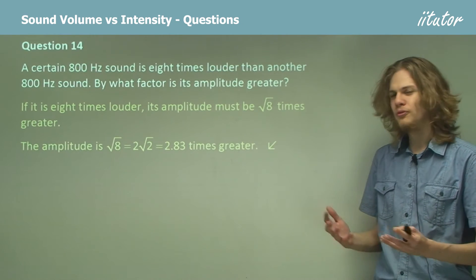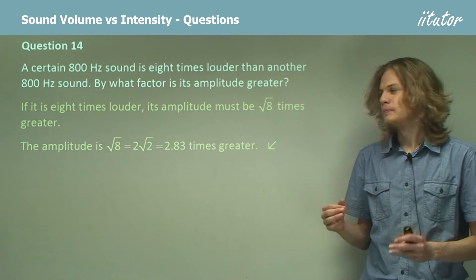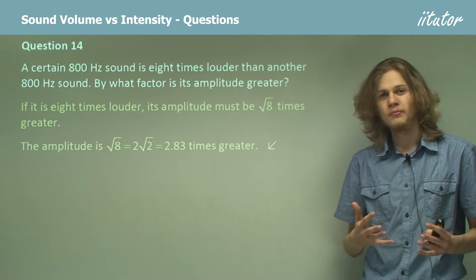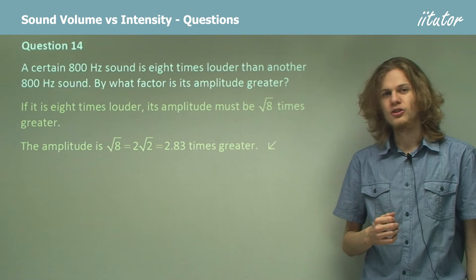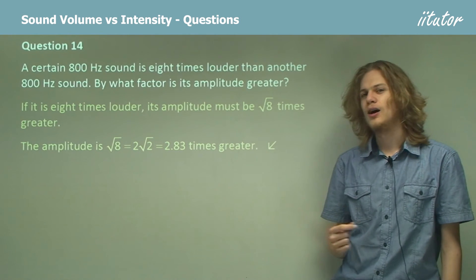We can, of course, simplify this using a calculator to 2.83. The amplitude of the sound is 2.83 times greater. And if you square that using a calculator, you'll get a number that will tell you that it's very close to being 8 times more intense.